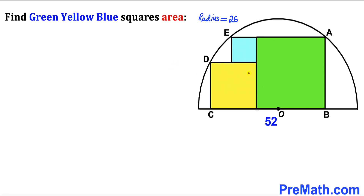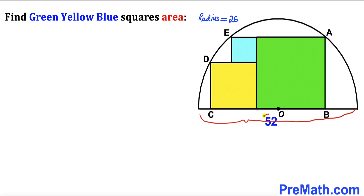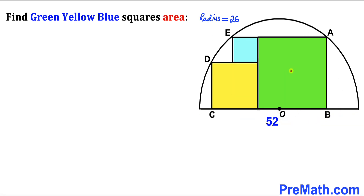Welcome to pre-math. In this video we have got three squares — a green one, a yellow one, and a blue one — fully inscribed in a semicircle with center O, as you can see in this diagram. The diameter of this semicircle is 52 units, and our task is to calculate the area of each of these squares individually.